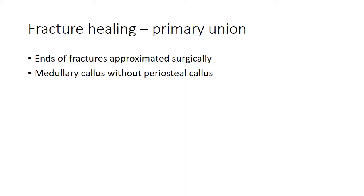Fracture healing resembles healing of skin wounds to some extent. Just like in skin wounds, fracture healing is also classified into primary union and secondary union. Primary union happens when the ends of the fractures are approximated surgically, with the help of clamps or metal plates. Here the union takes place with the formation of medullary callus without formation of periosteal callus.